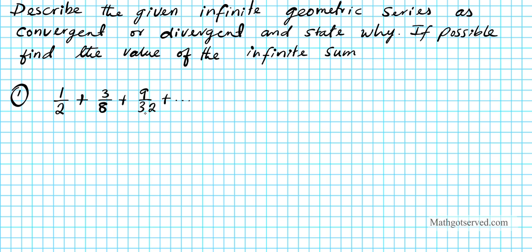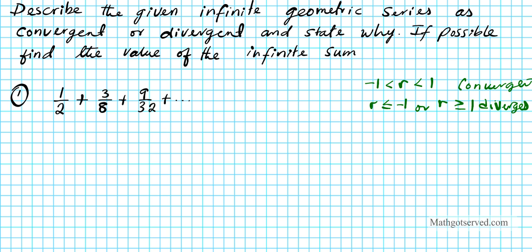First thing we want to do is ask ourselves: is this series convergent or divergent? All we need to do is compare the common ratio with an interval. Remember, if r is between negative 1 and 1, it's convergent. If r is less than or equal to negative 1 or greater than or equal to 1, it's divergent.